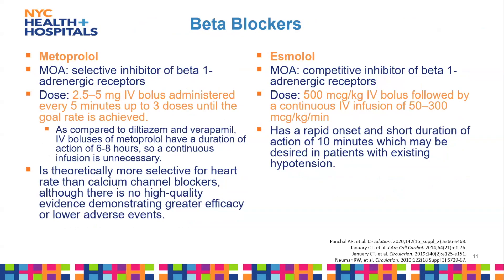For beta blockers, the main ones we use are metoprolol and esmolol. They competitively inhibit beta-1 adrenergic receptors. Metoprolol is dosed as 2.5 to 5 mg IV bolus administered every five minutes up to three doses. A key advantage compared to calcium channel blockers is its long duration of action, sustaining rate control for much longer than IV boluses of calcium channel blockers.